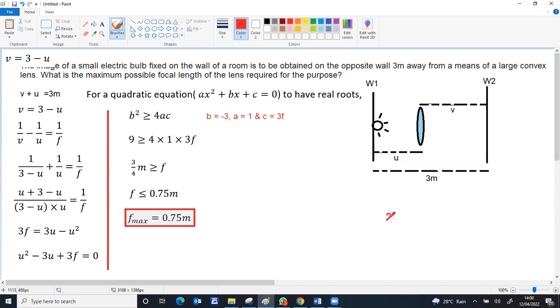If any quantity x is less than or equal to a value of 10, that means x can be any value less than 10 or equal to 10. So the maximum value of x will be 10. Same here: f can be less than or equal to 0.75 meters, meaning the maximum value of f is 0.75 meters.